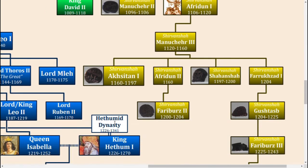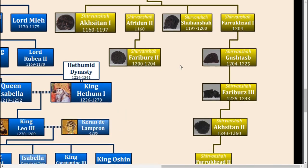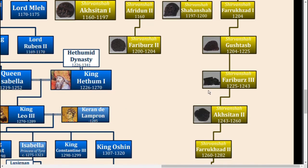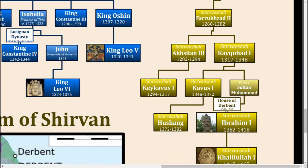After the death of Aksitan, there really weren't any significant rulers for around 180 years. Most of these rulers were not very well documented, all the way to the fall of the Khazranid dynasty. The new dynasty that formed after them was the Darbanids of the House of Derbent.